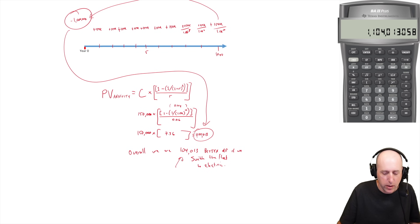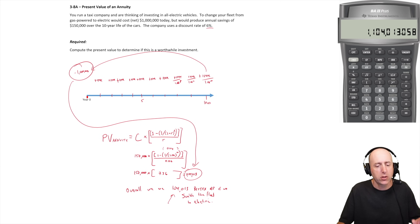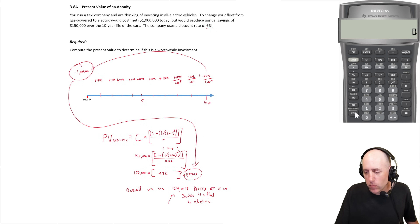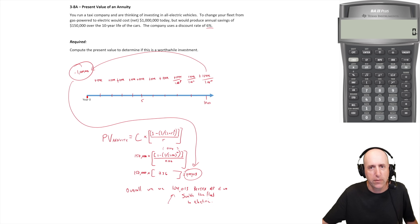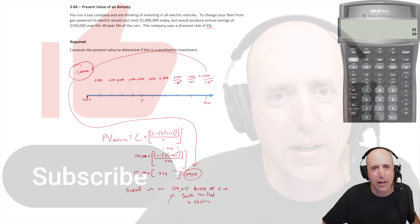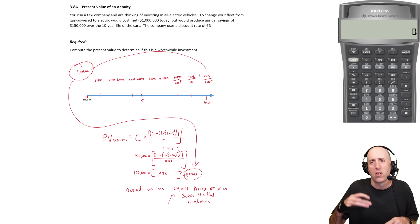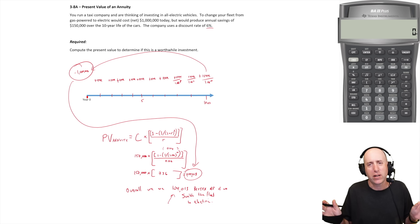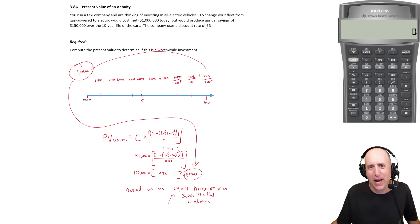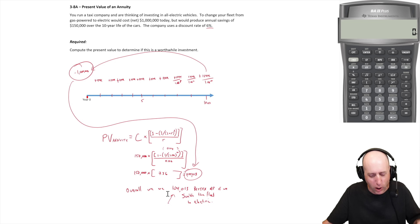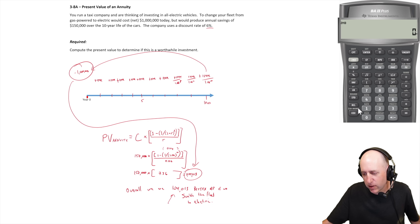We've solved it the formula way — now let me show you how to do it with the financial calculator. This isn't too complicated if you've been using your calculator all along. For the PV of an annuity, I actually prefer using the calculator since things can go wrong with the manual math. First, make sure you've cleared your memory: second function, clear TVM to clear time value of money, and second function, clear work.